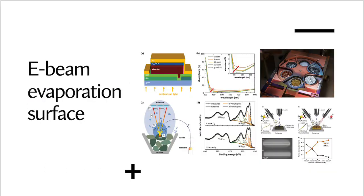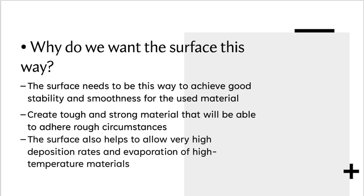This is what electron beam evaporation surfaces look like and the data sheets of it. The surface needs to be this way to achieve good stability and smoothness for the used materials, and to also create strong and tough materials to adhere to rough circumstances. The surface will also allow high evaporation temperatures for high evaporation temperature materials.